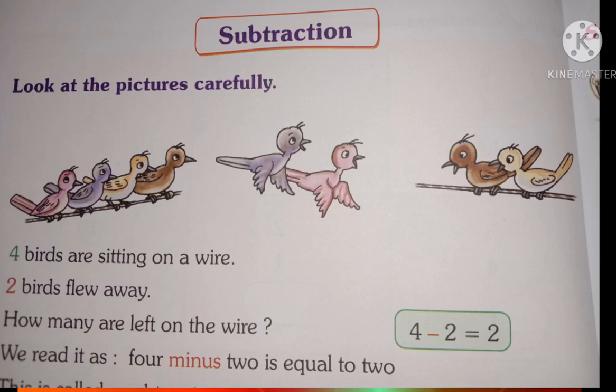How many birds are there? Counting: 1, 2, 3, 4. There are 4 birds. Now, 2 birds fly away: 1, 2. Two birds have flown away.